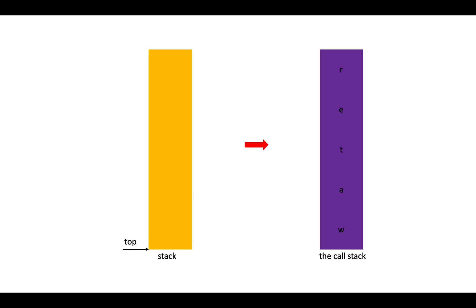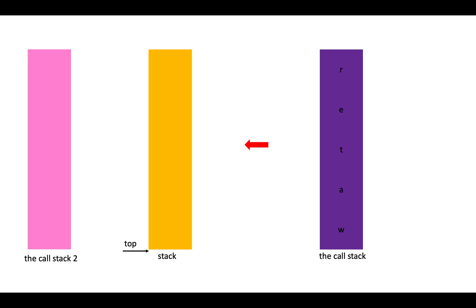We should insert these elements back to the stack in reverse order. So we deal with the first element R, making use of the cross stack of the insert bottom method. Since the stack is empty right now, we can directly put R into our stack.